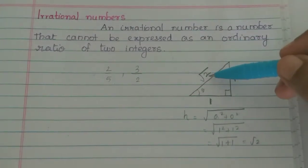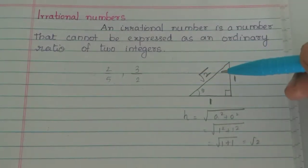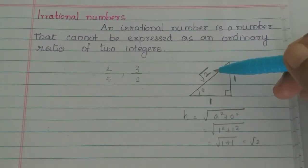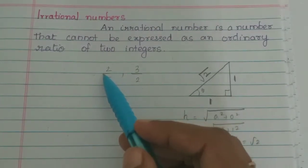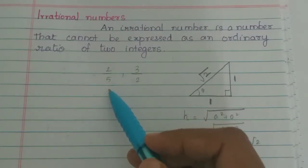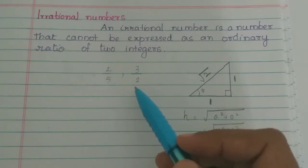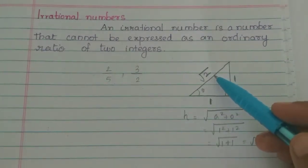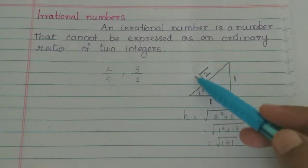What is the hypotenuse value? It is root 2. We cannot use a whole number or natural number, nor can we use a rational number. Because a rational number is a fraction — when we divide it, it will be terminating or recurring and non-terminating. These two conditions make a rational number. But root 2 cannot be divided that way, so this is called an irrational number.